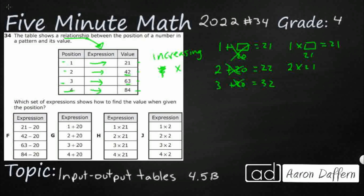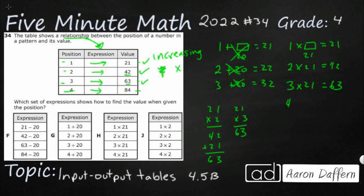2 times 21 — let's do it vertically — that's 42. 3 times 21: I could also just add another 21 to 42 since that's 21 times 2, and that gives me 63, which is what I'm supposed to get. And 4 times 21 — just add another 21, or do 21 times 4 — that's 84. So the rule is position times 21.